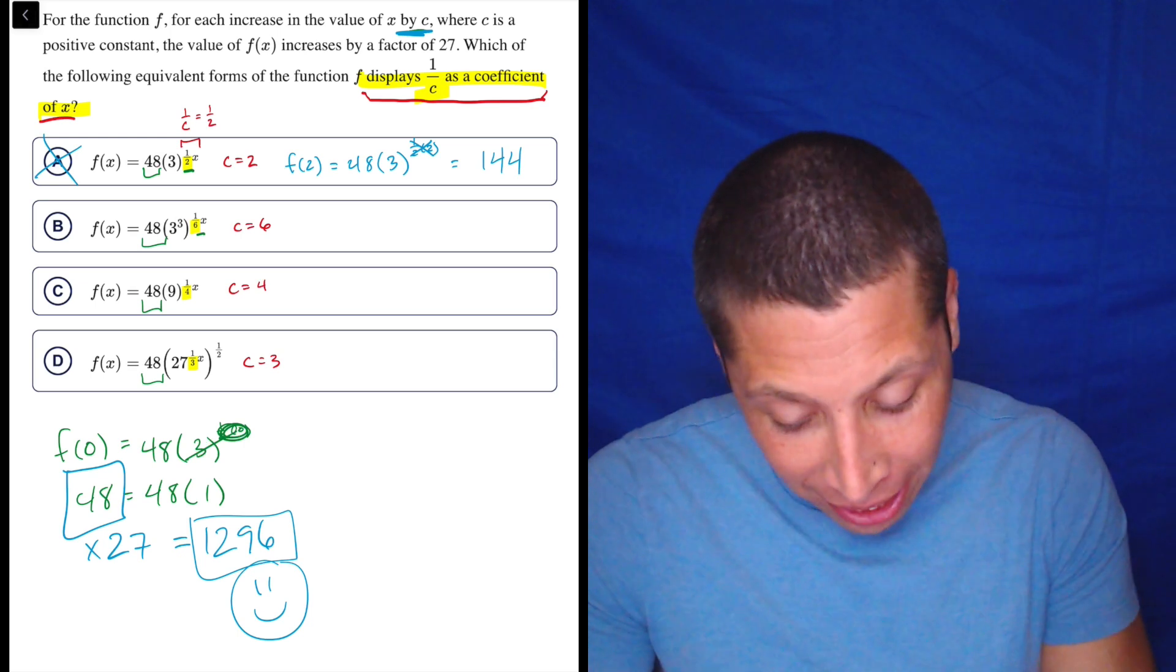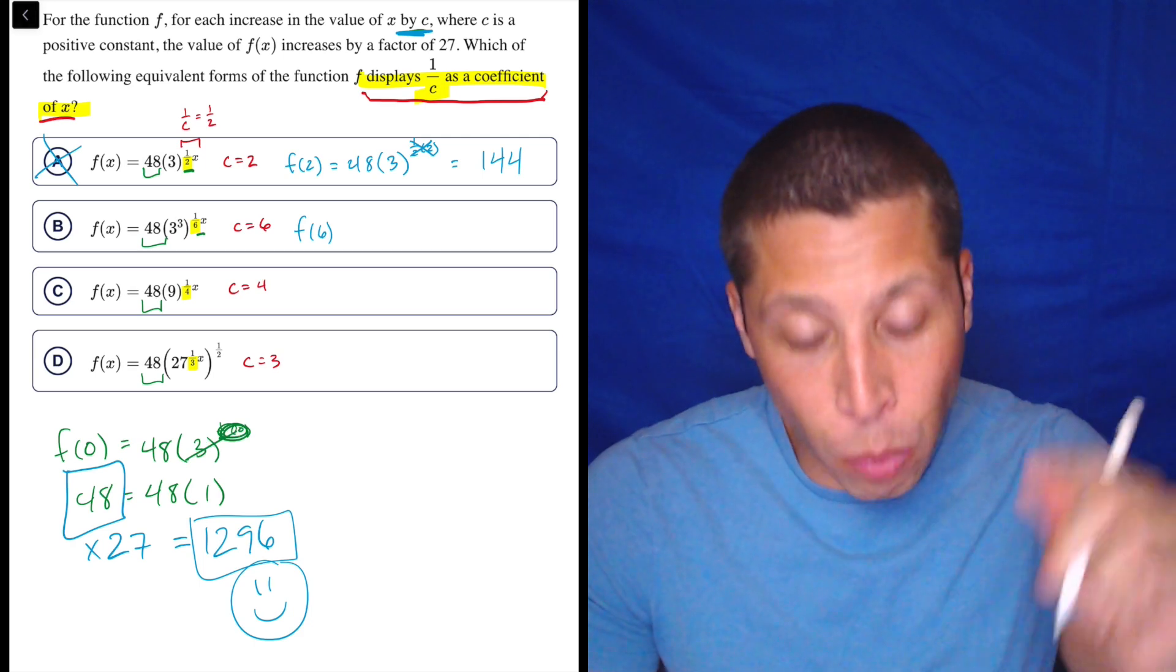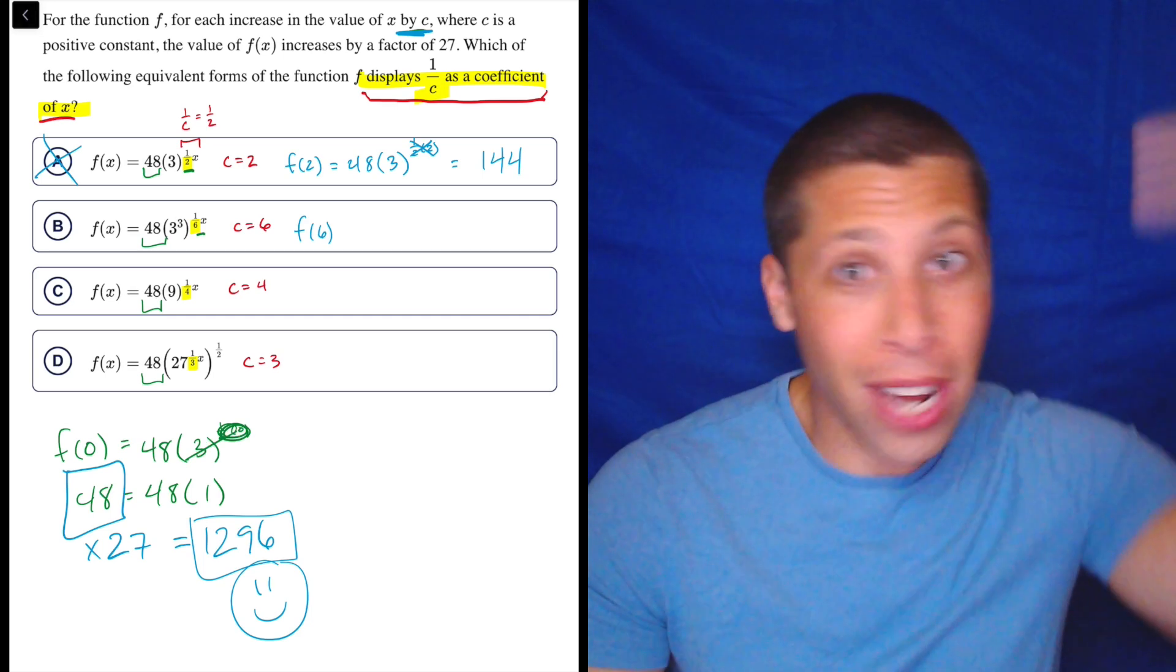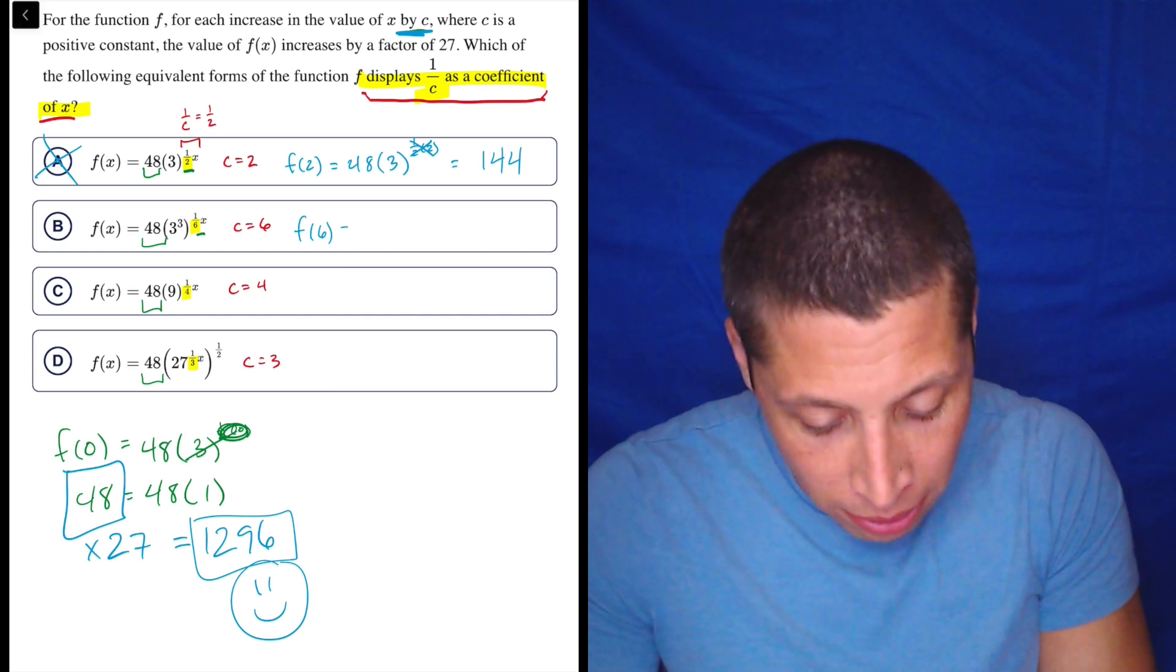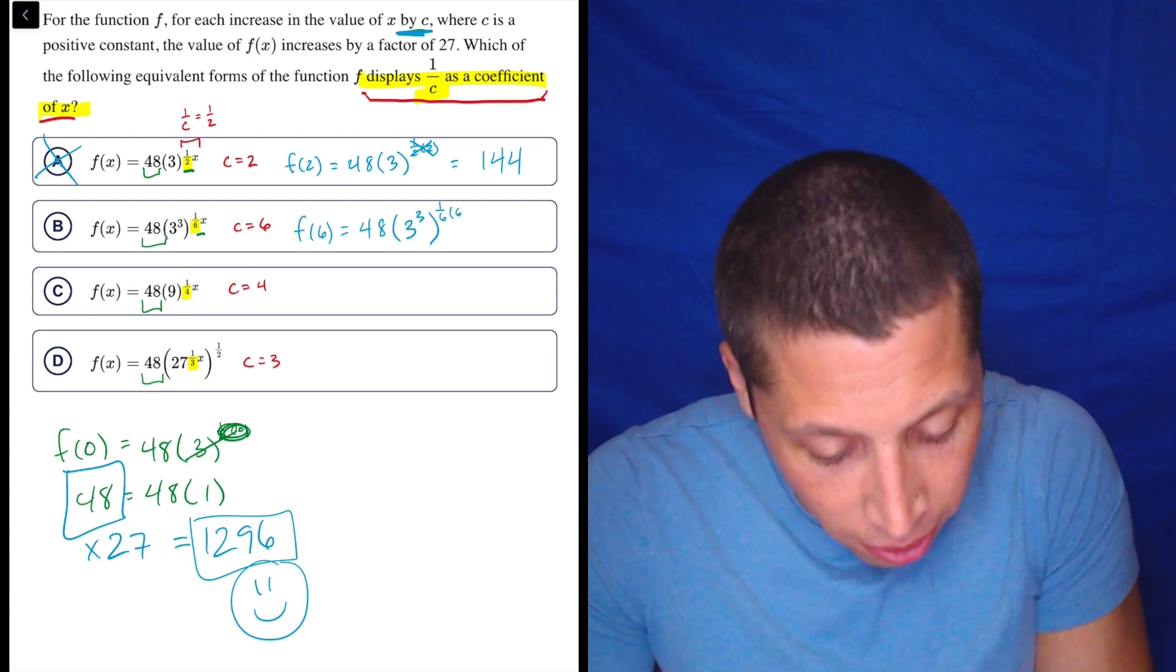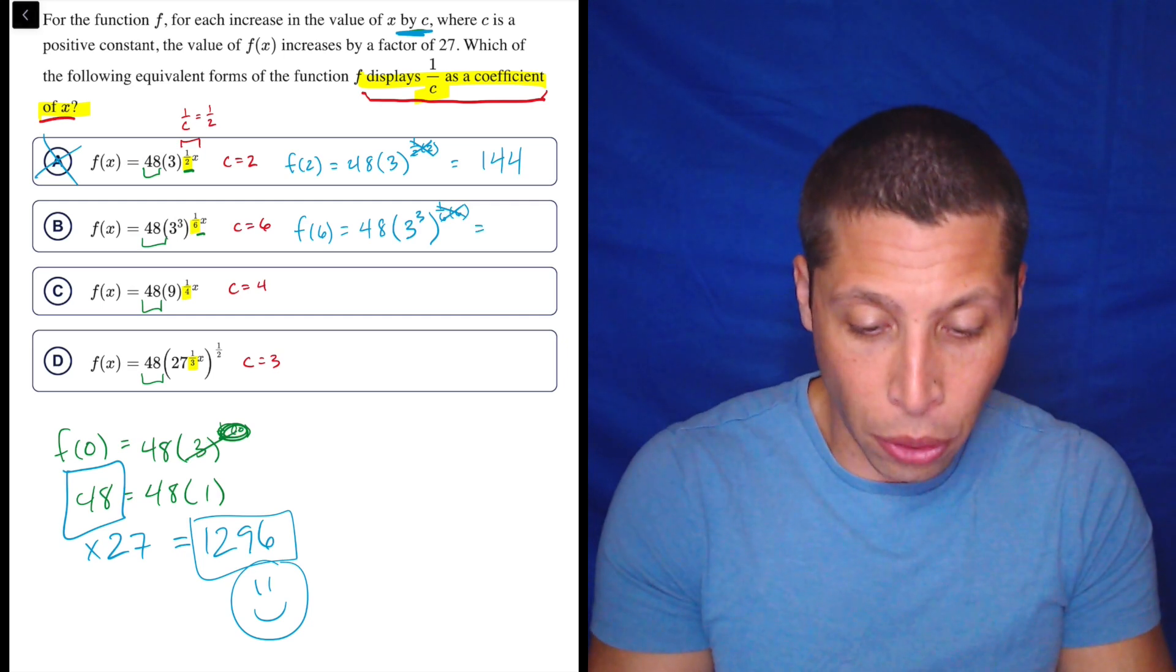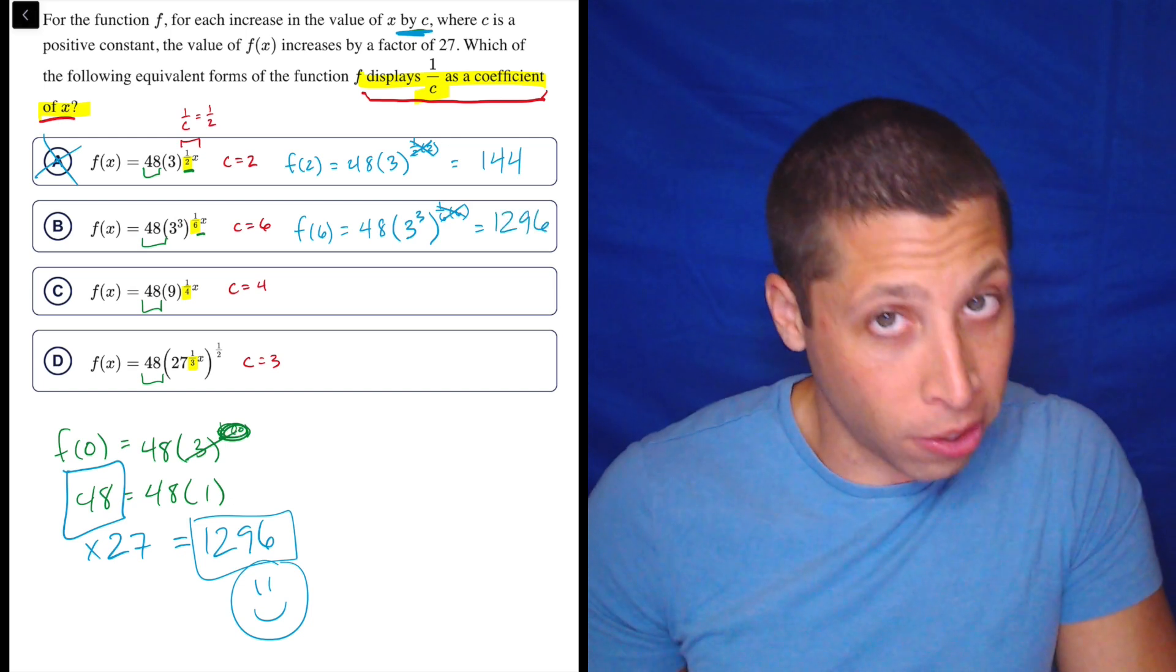So let's do this again for choice B. Now we're going to do f(6). Why 6? Because that's what we have to increase x by. x was 0, now we increase it by c. In choice B, c is 6. This is weird, we're not doing the same c because each choice has provided me with a different value of c. So that's annoying, but 48 times 3 to the 3rd. And again, 1/6 of 6 is basically irrelevant because that's just 1. So 3 to the 3rd is 27. 48 times 27 is 1296. So this looks good.